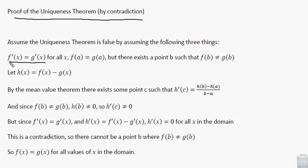First, the conditions of the uniqueness theorem are true: that f prime of x equals g prime of x for all x values, and that f of a equals g of a for some point a — any particular point. But instead of the conclusion being true — that f of x equals g of x for all values — we say that's not true, and that there exists one value where f does not equal g. If we assume all three together, they will produce a contradiction.